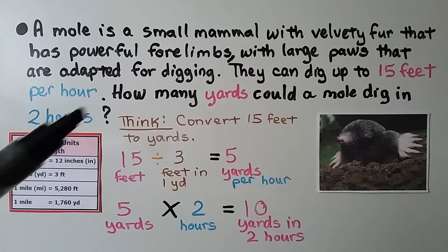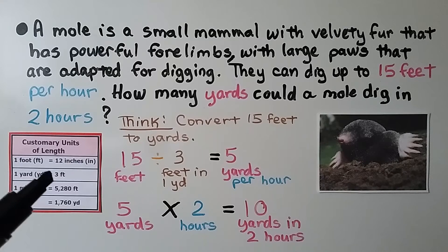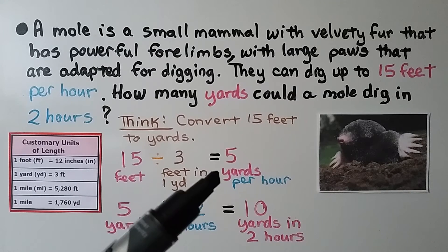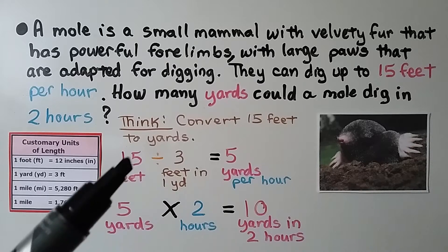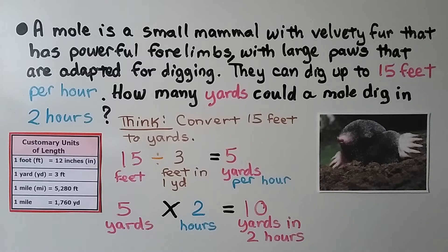It told us 15 feet per hour, but it wants yards in two hours. So we need to convert 15 feet to yards. And one yard is three feet. We do 15 feet divided by three feet in one yard. That's five yards per hour. And we need two hours. So we do five yards times two hours. That's the amount he digs in one hour. We need two hours. That's 10 yards in two hours.